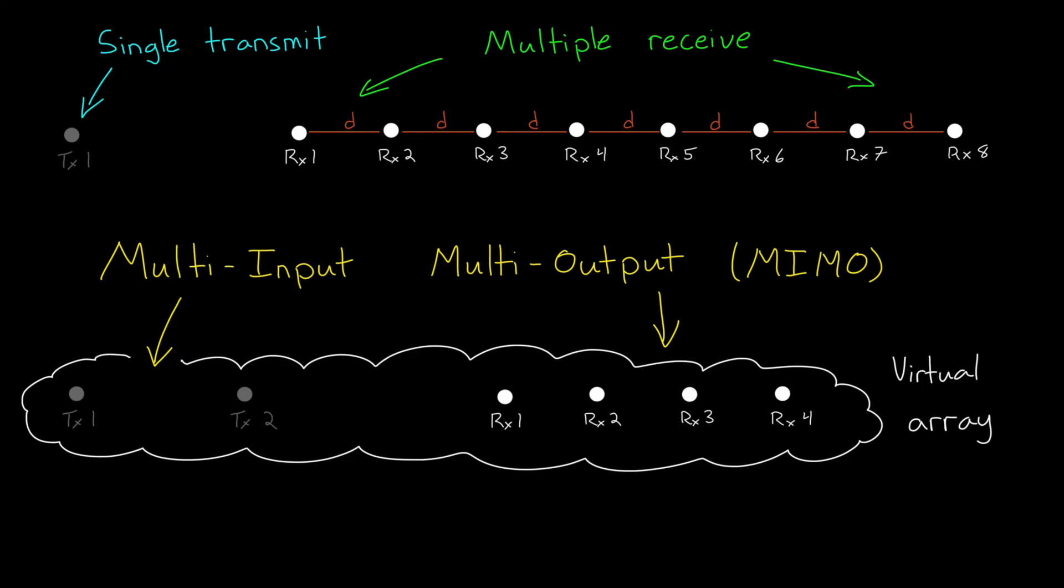With a virtual array, you can get the resolution benefit of having more receive antennas, but with fewer overall antennas. Instead of, say, having 8 receive antennas and 1 transmit, we could have 2 transmit antennas and 4 receive, and form a virtual array that is equivalent. If the arrangement of these antennas is done just right, this system performs the exact same with 6 antennas as a system does with 9.